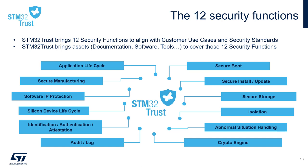Starting on the right, the two first security functions are Secure Boot and Secure Firmware Install and Update, which are needed to ensure the authenticity and integrity of a firmware before executing or programming it. Then we have Secure Storage to securely store sensitive data or keys inside the device. We have also Isolation, which is the function to isolate trusted and non-trusted parts of an application from each other. Then Abnormal Situation Handling — for example, when tampering is detected — to erase backup registers, and Crypto Engine to process cryptographic algorithms, typically to encrypt sensitive data and to secure data communications.